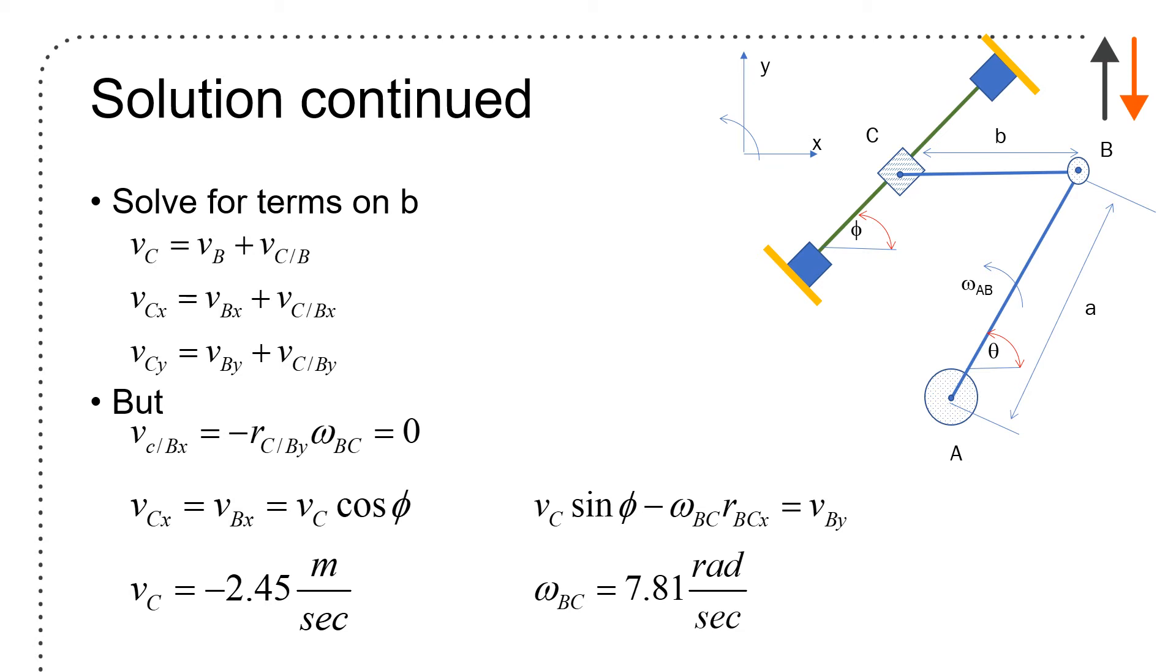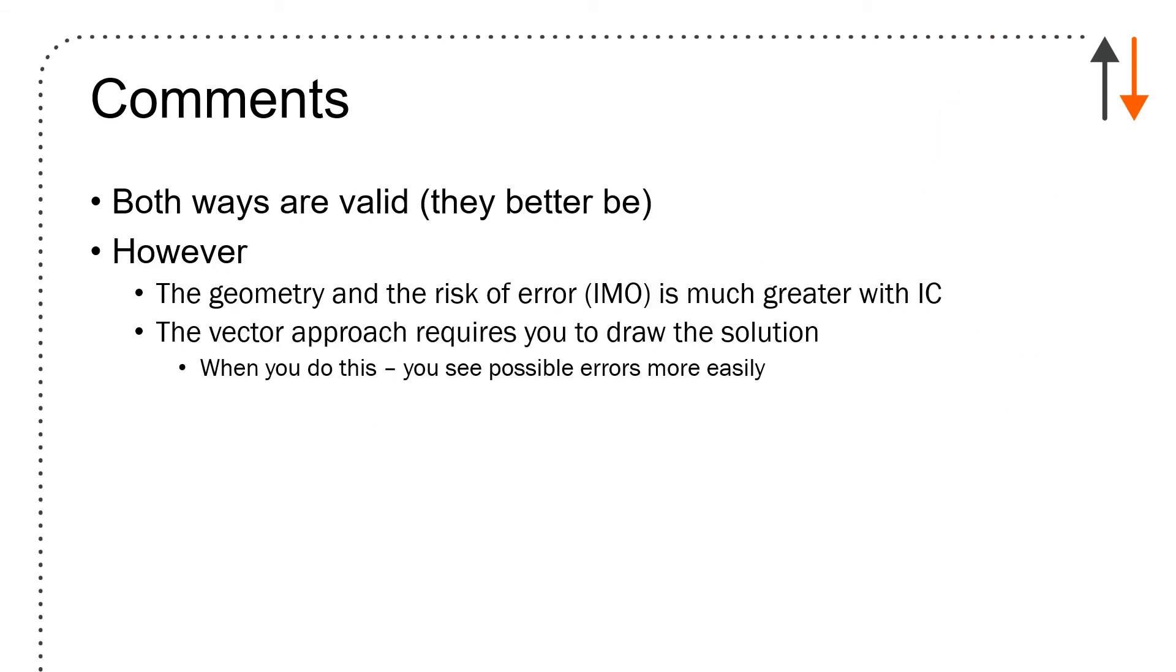So it doesn't necessarily look a lot easier, but you have the right directions and everything appears from this. Both ways are valid. They better be. They get the same result. The geometry and the risk of error is much greater for me with ICs, instantaneous centers. Vector approaches require you to draw the solution. In fact, in MIU 100 and dynamics, you really should. But when you do this, you often will see where your problems are.